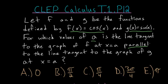Since we need to find tangent lines that are parallel from each of these graphs, we will need to set the derivatives of these functions equal to each other and figure out for which x values the derivatives are equal. But before we do this, let's first look at this graphically.